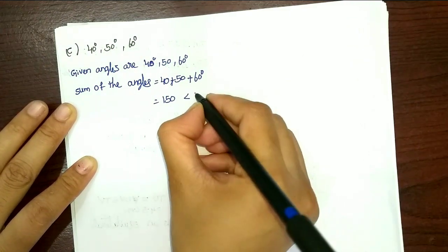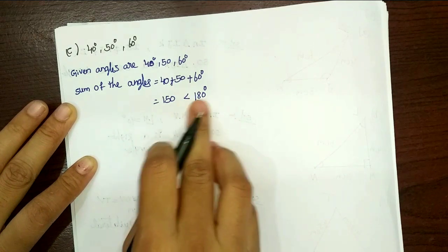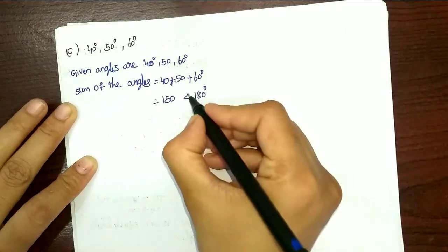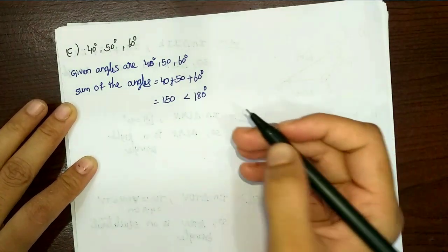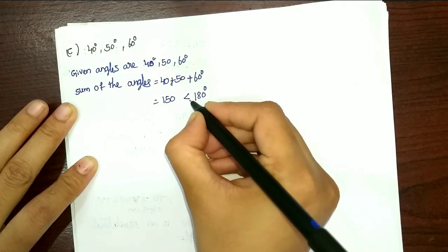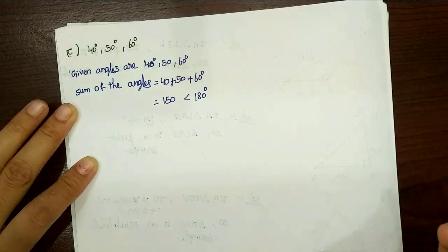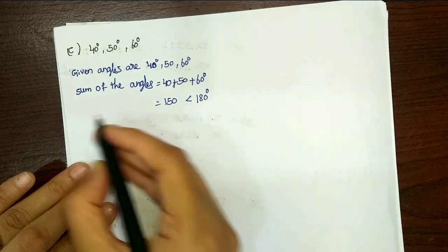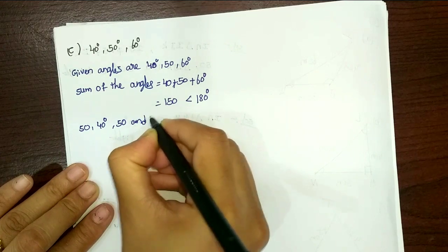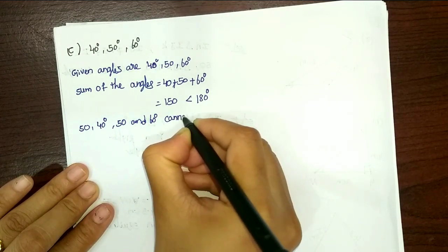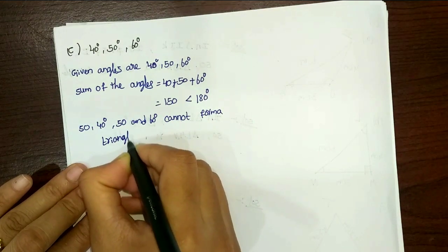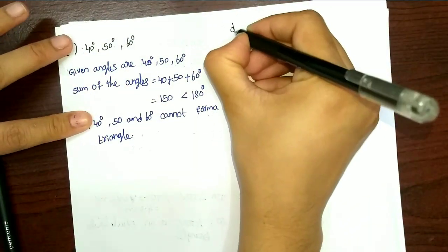So 150 is less than 180. For a triangle to form, the sum must be exactly 180. Since 150 is below 180, 40, 50, and 60 cannot form a triangle.